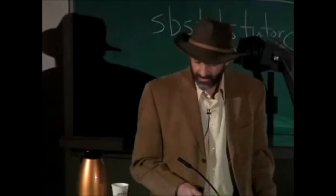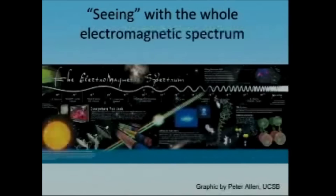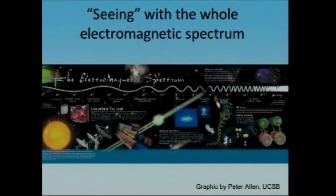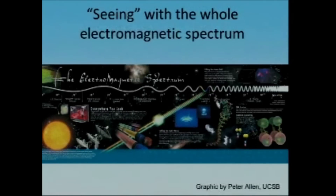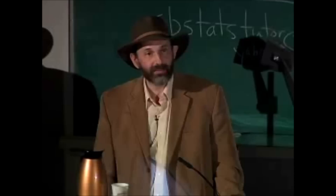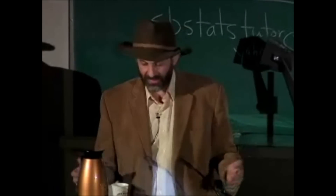What is terahertz radiation? Electromagnetic radiation is all around us. Some of it we see as light. Some of it we can feel as heat. And some of it we know is there when we turn on the radio. All of these types of electromagnetic energy have in common that they are waves that travel at the speed of light.